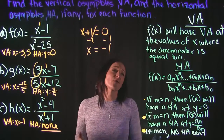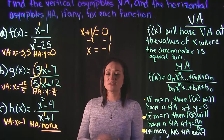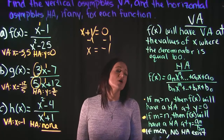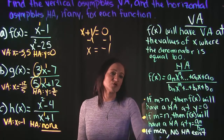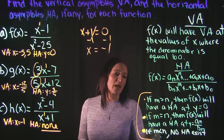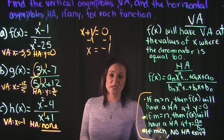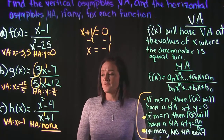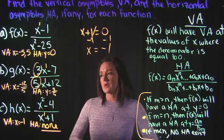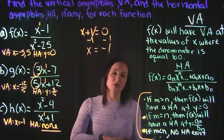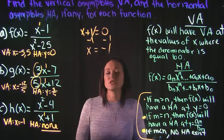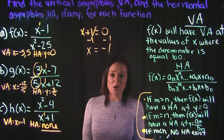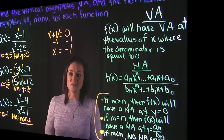To summarize: for vertical asymptotes, set the denominator equal to 0 and solve. For horizontal asymptotes, be aware of the three rules and be familiar with them so you know which rule applies to your specific function. That's it for this video.